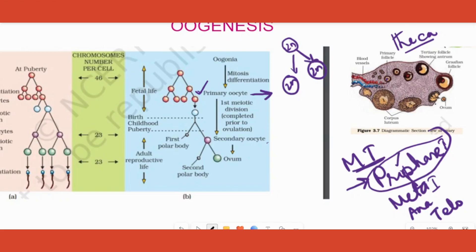Just before the release of the primary oocyte, it completes the first phase of meiosis, and then we call this primary oocyte a secondary oocyte. So remember: a secondary oocyte is what we get when the primary oocyte completes meiosis 1. Does it then undergo meiosis 2 also? Not yet.